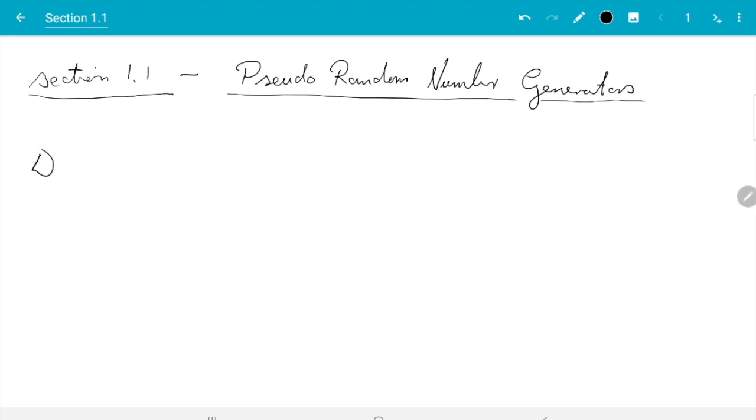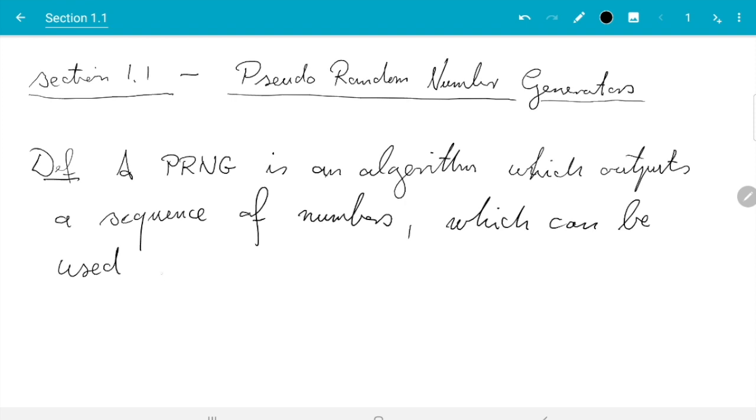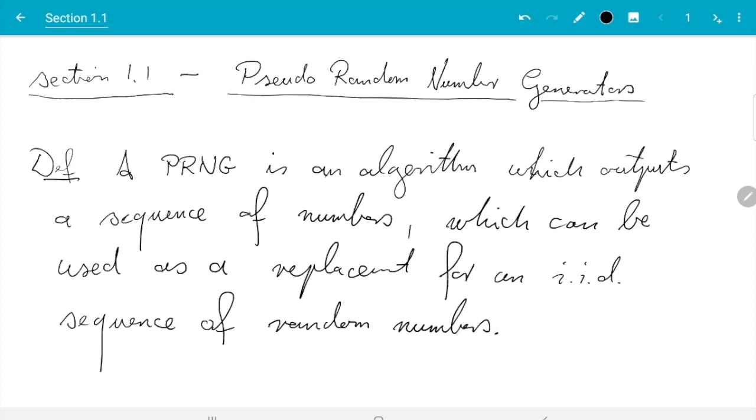In the book I define a pseudo-random number generator to be an algorithm which outputs a sequence of numbers which can be used as a replacement for an IID sequence of random numbers. IID stands for independent and identically distributed.